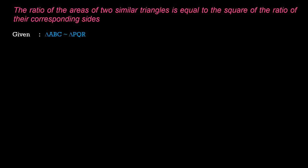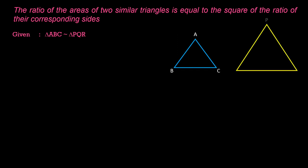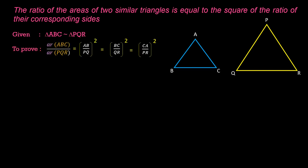The ratio of the areas of two similar triangles is equal to the square of the ratio of their corresponding sides. Consider two triangles ABC and PQR. Given that these two triangles are similar, meaning they are equiangular and their corresponding sides are in proportion. We have to prove that area of triangle ABC over area of triangle PQR equals AB by PQ whole squared, equals BC by QR whole squared, equals CA by PR whole squared.